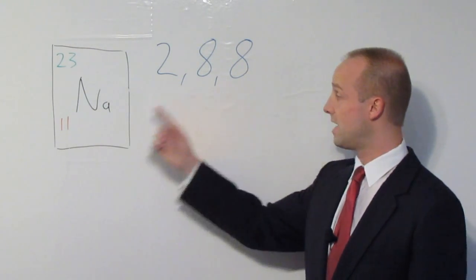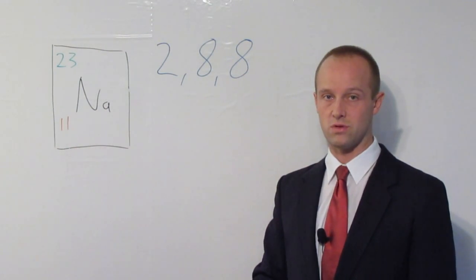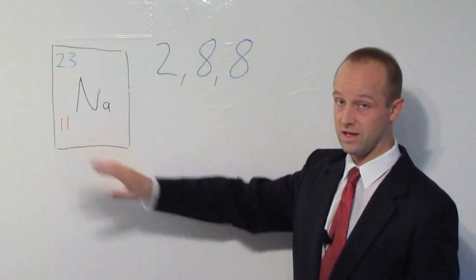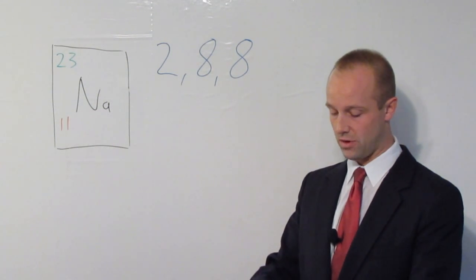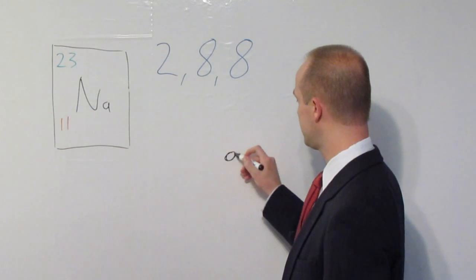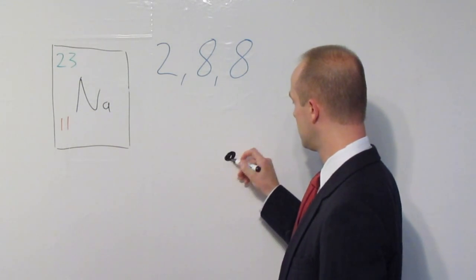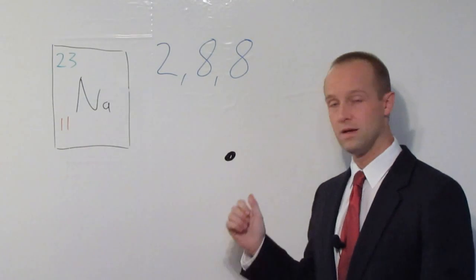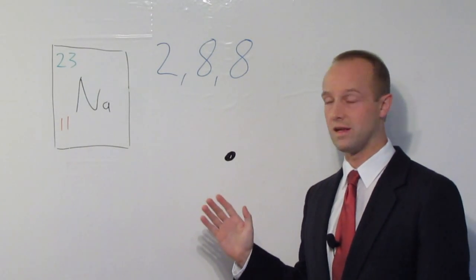So, 2, 8, 8 and 11 is all we need to be able to draw the electron structure for this, and you will be given this. So, how do we do this? Well, let's draw our atomic nucleus first. Protons and neutrons in there. But, again, we're not worrying about that in this lesson.